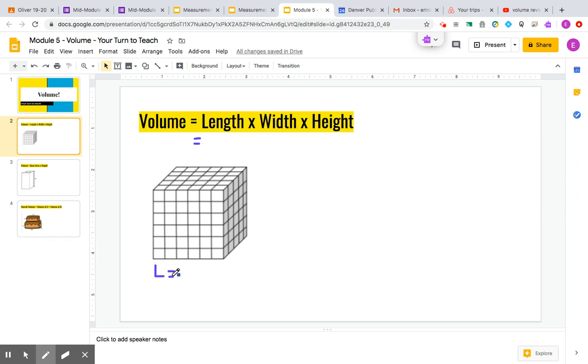I know the length is that front facing wall and it's 1, 2, 3, 4, 5, 6. 6 cubes long.